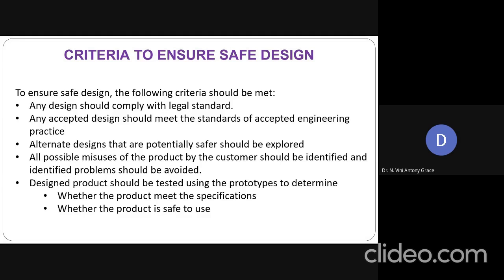The third criteria is we must always think of alternate designs that are potentially safer. While incorporating safety measures into the product we design, we might have explored and incorporated a few safety measures. But we always have to think: is there any other alternate method or alternate design that is potentially safer than what we have made? That also should be explored in order to ensure a safe design.